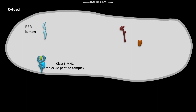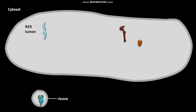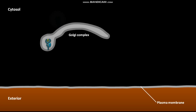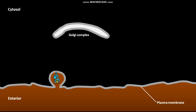The class I MHC molecule-peptide complex then exits the RER lumen by a vesicle. The vesicle containing the class I MHC molecule-peptide complex moves towards the Golgi complex, fuses with it, and then buds off from the Golgi complex. The vesicle then moves towards the plasma membrane of the target cell or host cell, where it fuses with the plasma membrane.